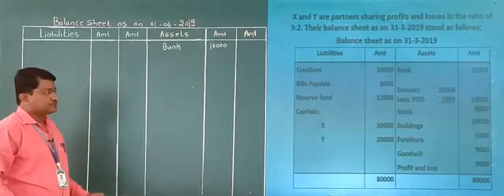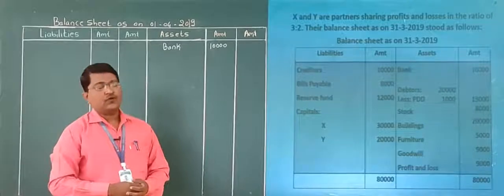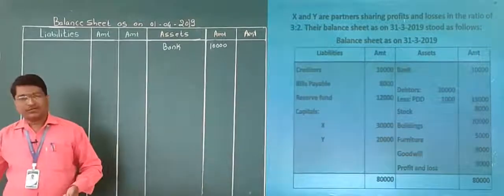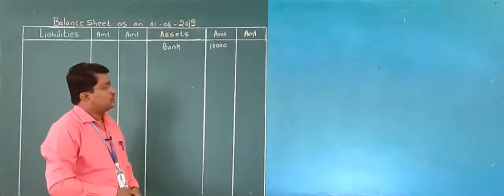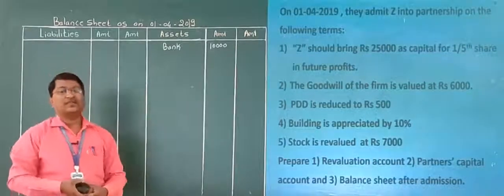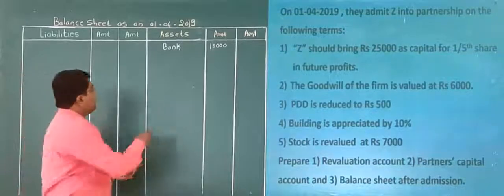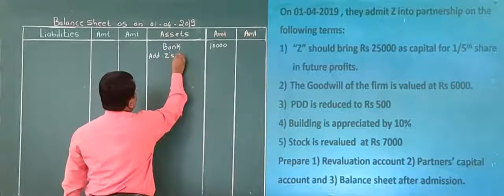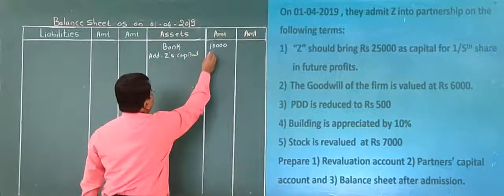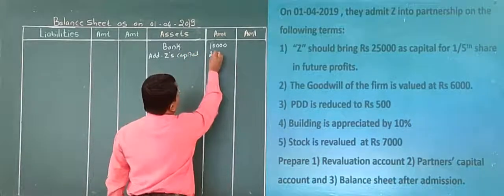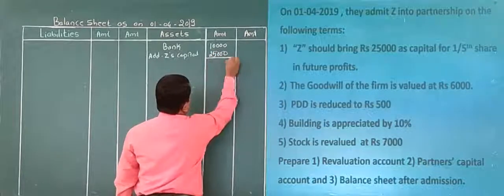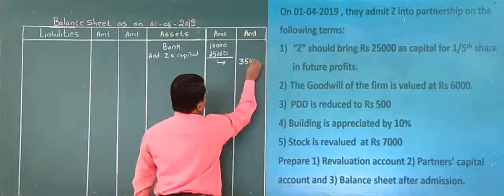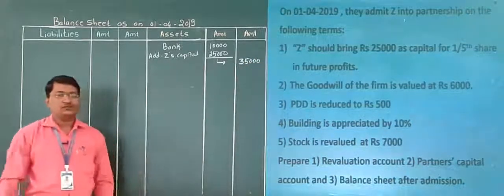Next, to the bank amount, we add the new partner Z's capital. Z should bring rupees 25,000 as capital. So we add Z's capital of 25,000. The total bank amount is therefore 35,000.